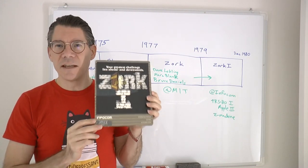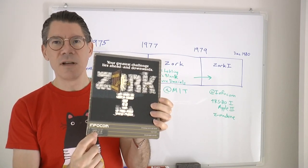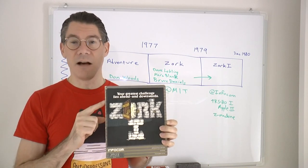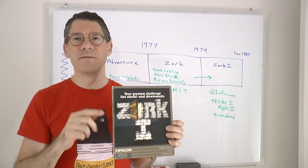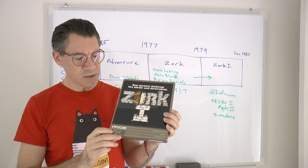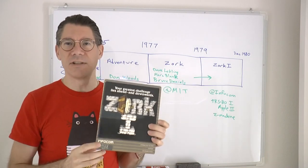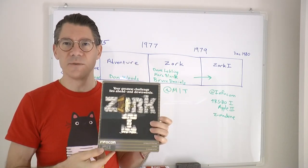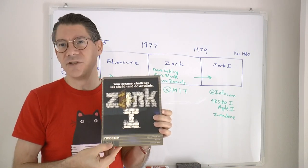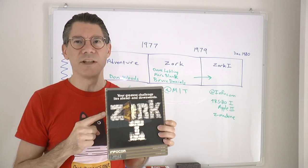The interesting thing about Zork 1 is that even though it says it's for the Apple II, which ran on a 6502 processor, the game itself did not run on the processor — it ran on a virtual machine that ran on the processor. In this way, they were able to come out with the same game for the TRS-80 Model 1, the IBM PC, or whatever other machine there was. All they had to do was change the virtual machine, but the game itself was completely unchanged.